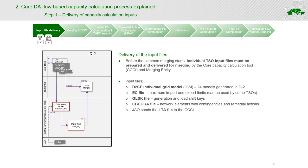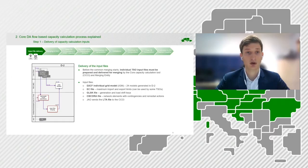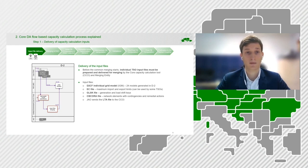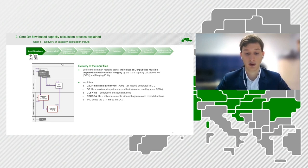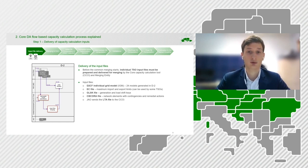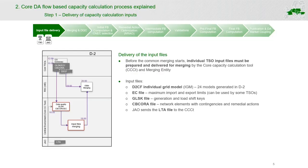There are four basic inputs provided by the core TSOs: the individual grid model, which is the representation or prediction of how the network will look like on the day of delivery; a list of external constraints; a file of generation load shift keys; and lastly, a list of critical network elements. These inputs are really important because the quality of the input determines the quality of the outputs. I would like to go through these inputs one by one.